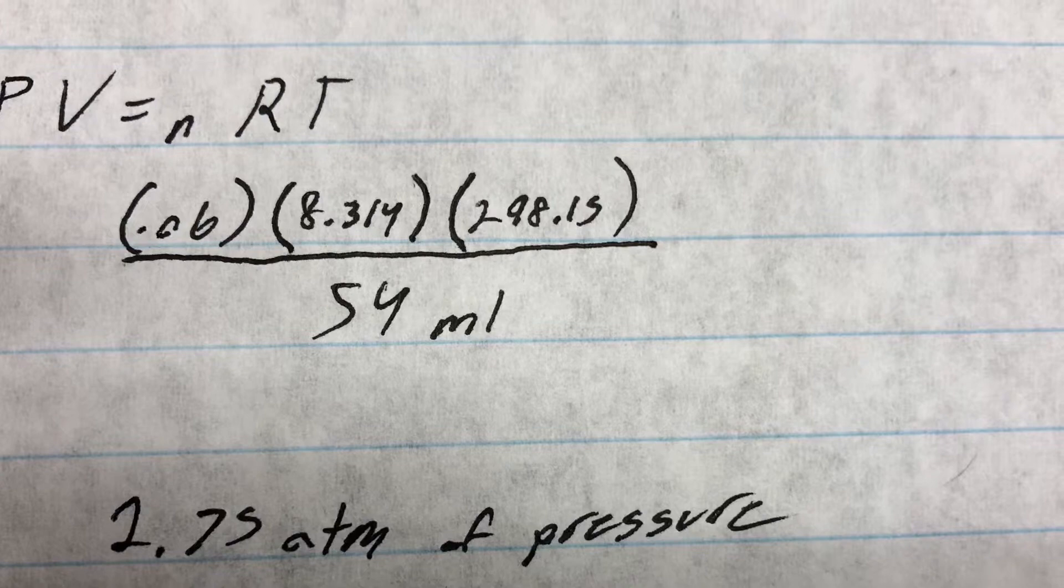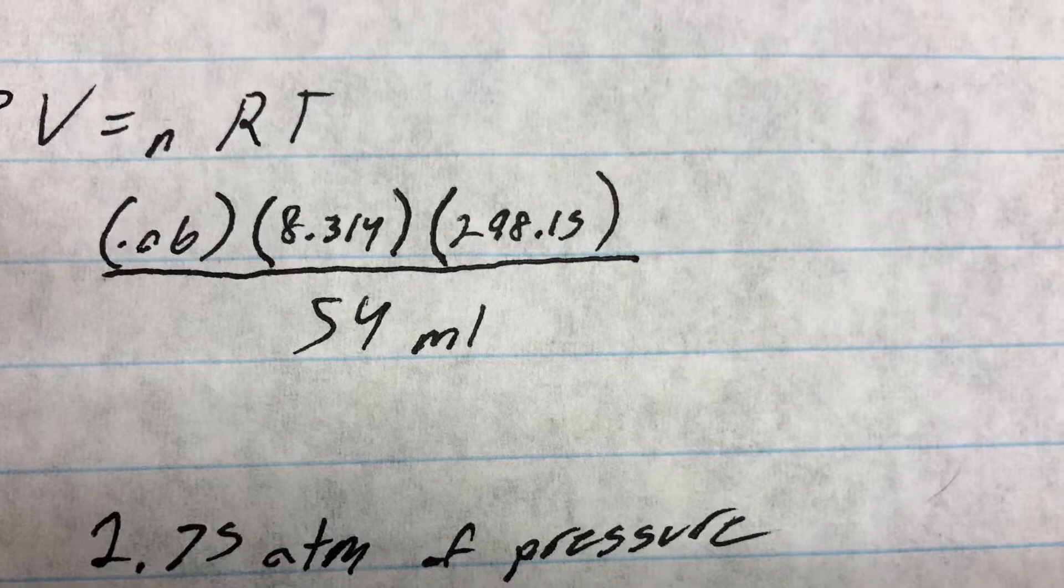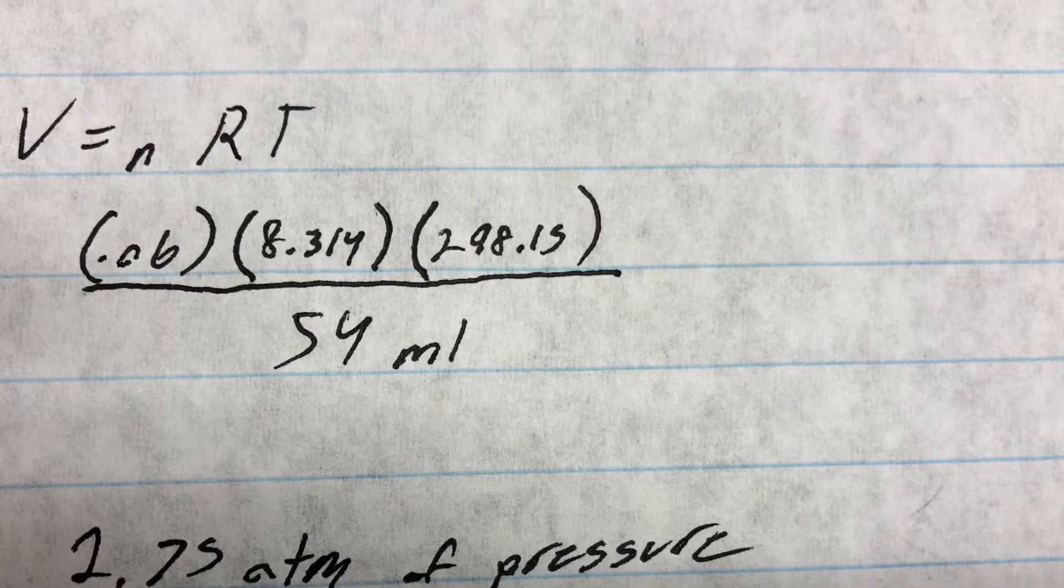In order to find the pressure, we have to divide by the volume. Using this equation, we determine 2.75 atmospheres of pressure.